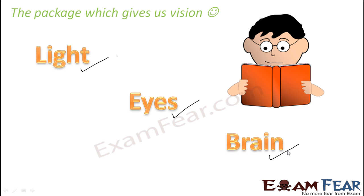In this lesson we are primarily going to talk about light — reflection of light and how reflection of light helps us to see objects. Then we are going to talk about the structure of our eyes and how eyes help us to see things. That is our quick agenda in this lesson.